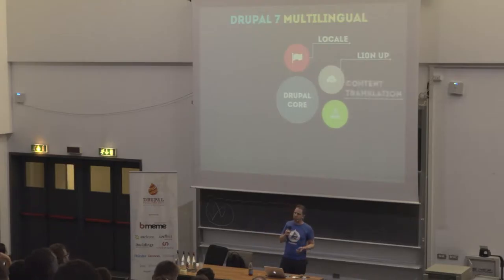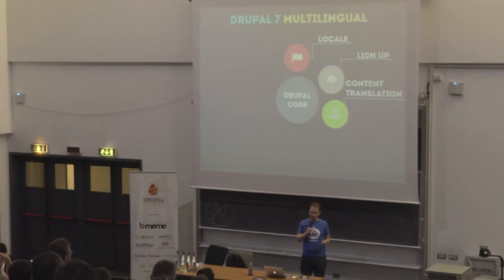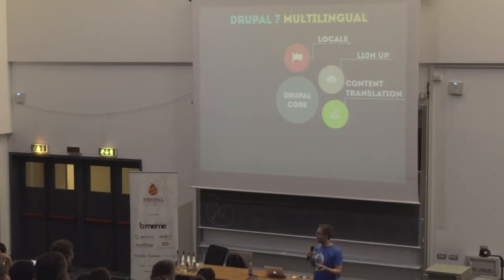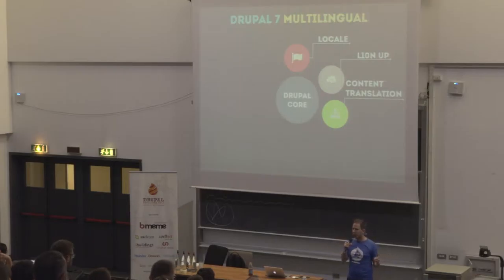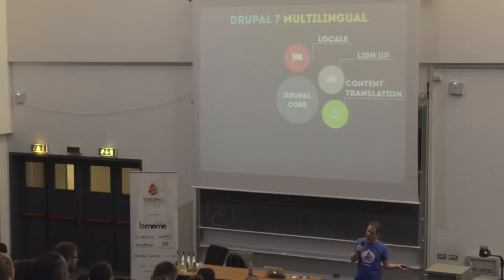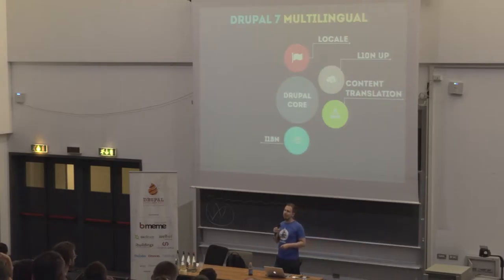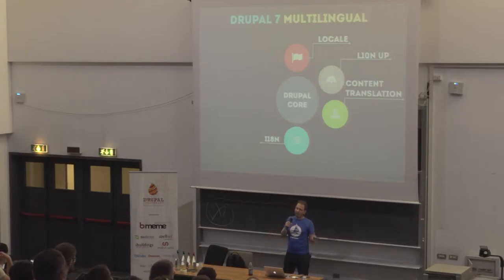The only other core module for multilingual in Drupal 7 is Content Translation, which allows you to translate nodes and maintains copies of those nodes. But once you want to translate taxonomy terms or menu items associated with those nodes, there's no solution — nothing. So we built a whole set of other modules to support that. The i18n module suite contains solutions for translating menu items, taxonomy terms, and all of those things.